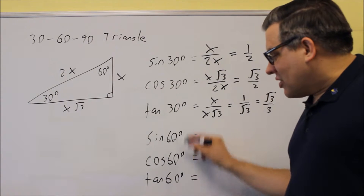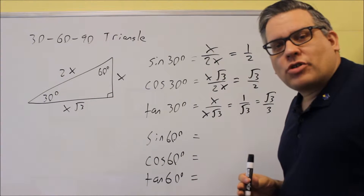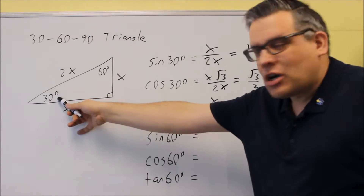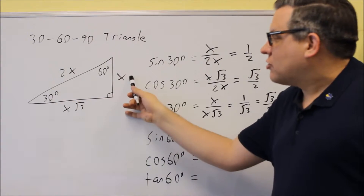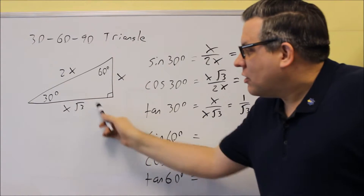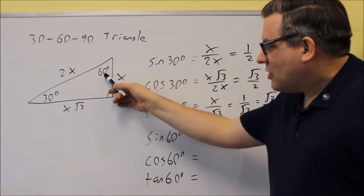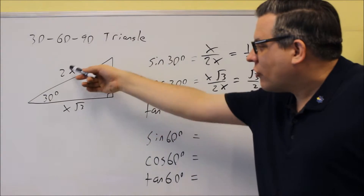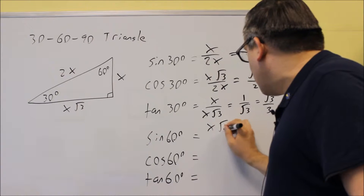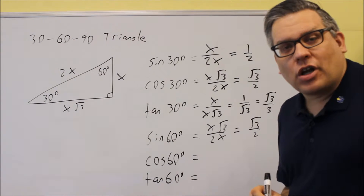Now let's take a look at 60 degrees, because we can do this in the same triangle. The difference is when we do our trig definitions, the opposite side changes. If we have 30 degrees, the opposite side is across the triangle from 30. But if you're using 60, then the side opposite 60 degrees is x√3. So sine 60 degrees equals x√3 divided by 2x, which gives us √3 over 2 — the same value as the unit circle.